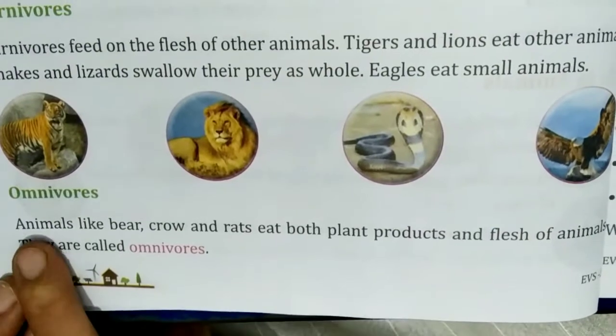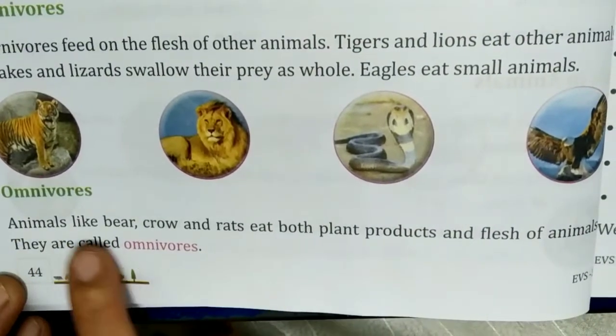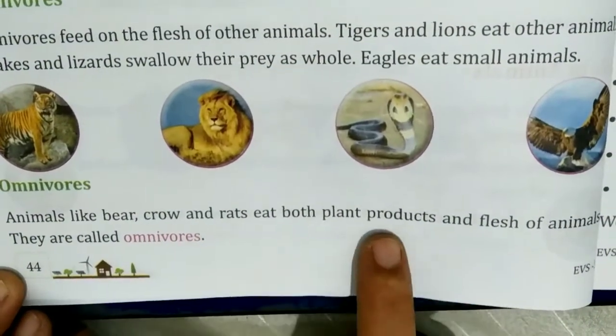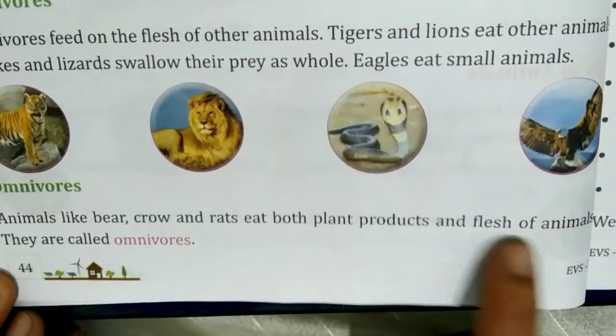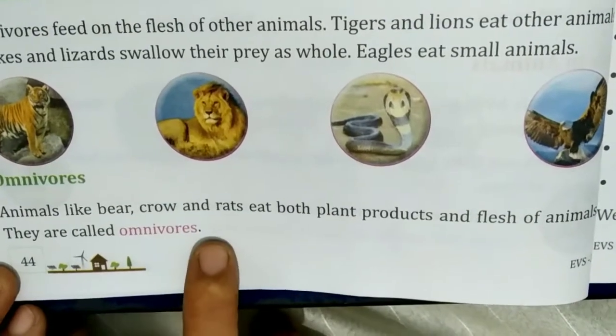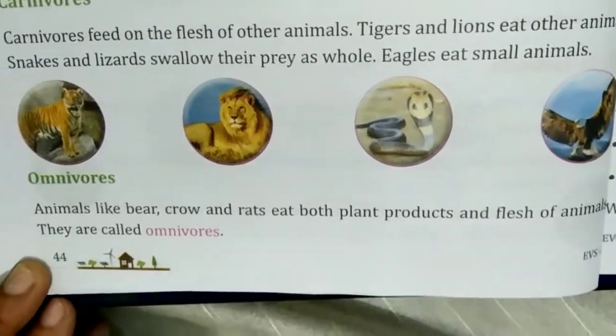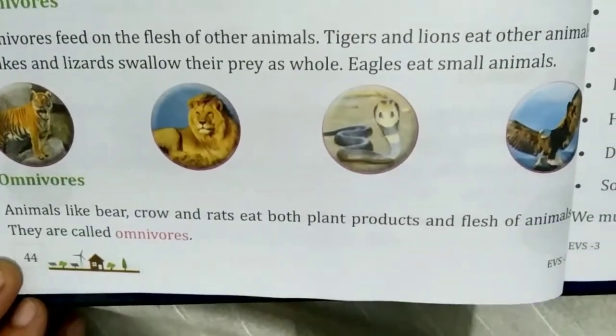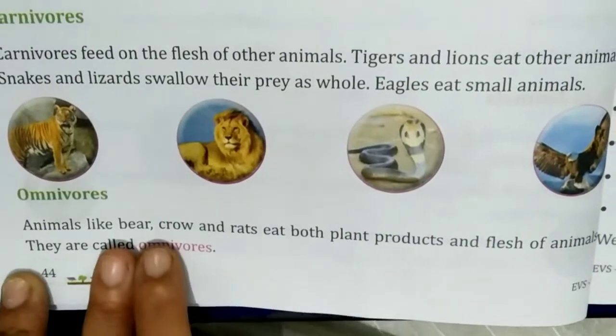Now omnivorous. Animals like bear, crow and rat eat both plant products and the flesh of animals. They are called omnivorous animals.